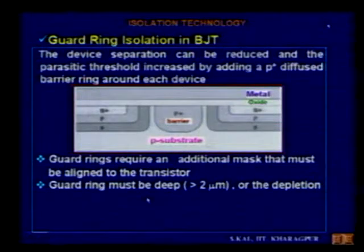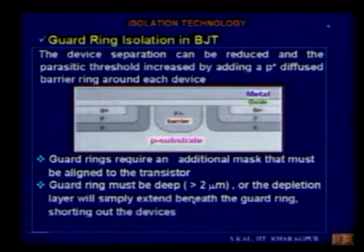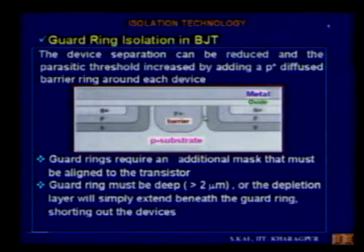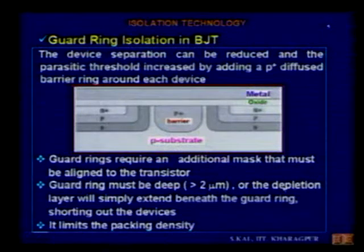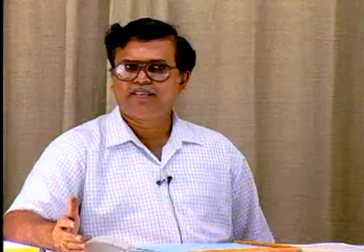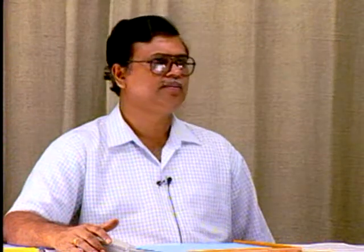The major limitation of guard ring isolation is that it reduces packing density. In VLSI, the goal is high-density circuits — integrating millions of transistors in a small area. You cannot allow a lot of space for isolation. If the guard ring is shallow, the depletion layer can extend beneath it and connect adjacent devices. So guard ring isolation is not a viable solution for high-density, high-speed circuits.